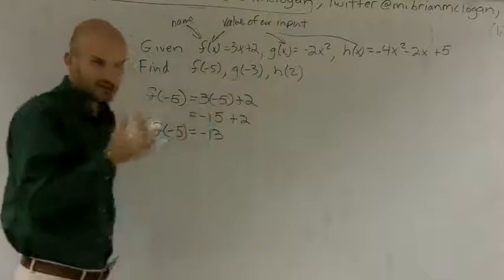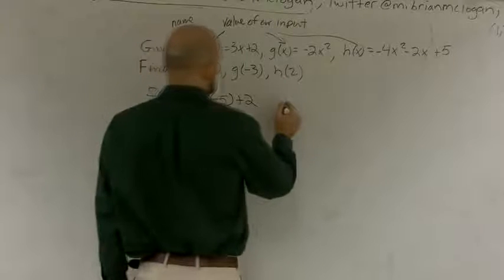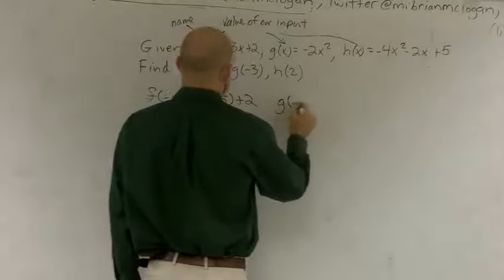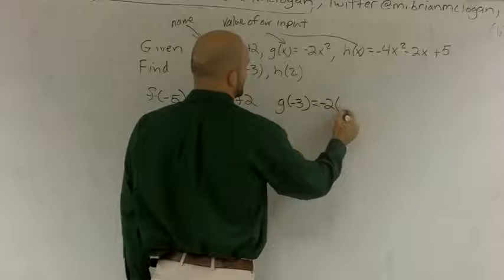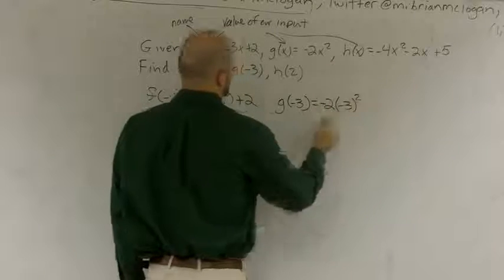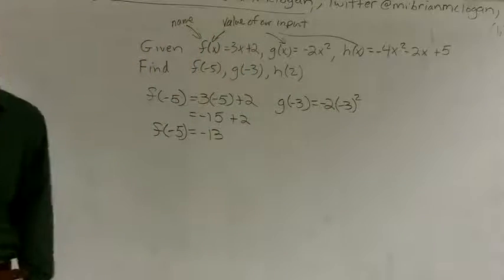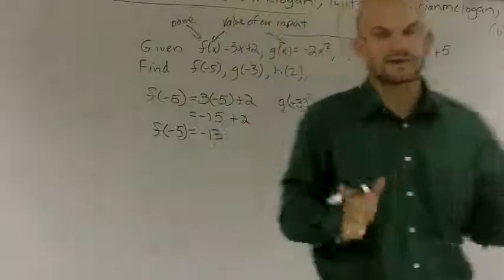Now, if we move on to Grant, I call them. So g of negative 3 equals negative 2 times negative 3 squared. And guys, it's really important. I really like to put, whenever I'm inputting, I want to make sure I put in parentheses. This will help you understand, one, what you're inputting. And then second, it will help you really keep your negatives, negative signs together.